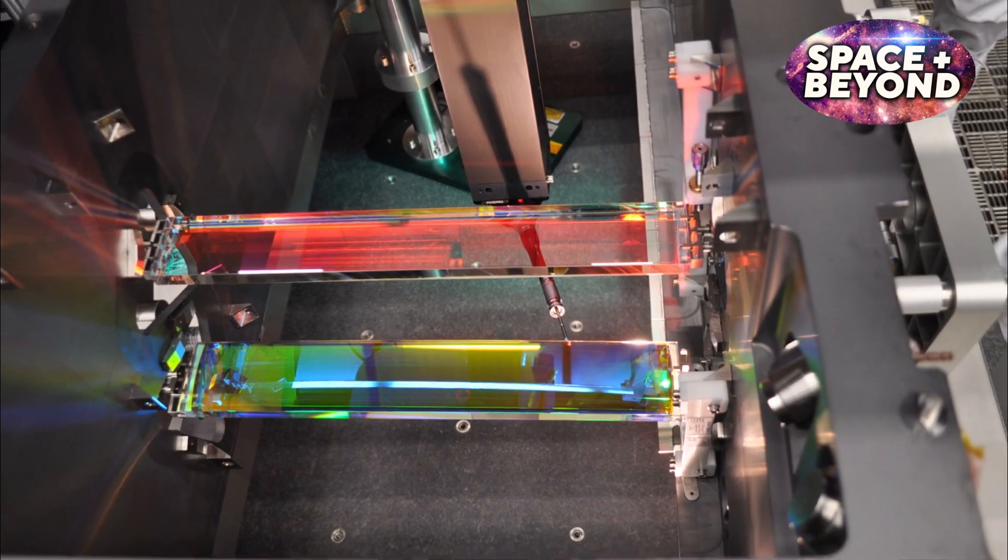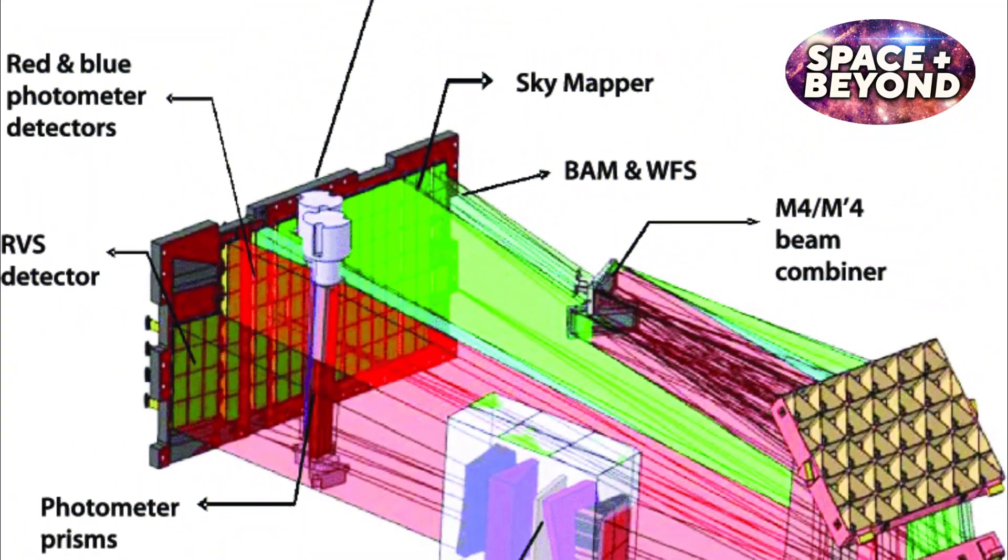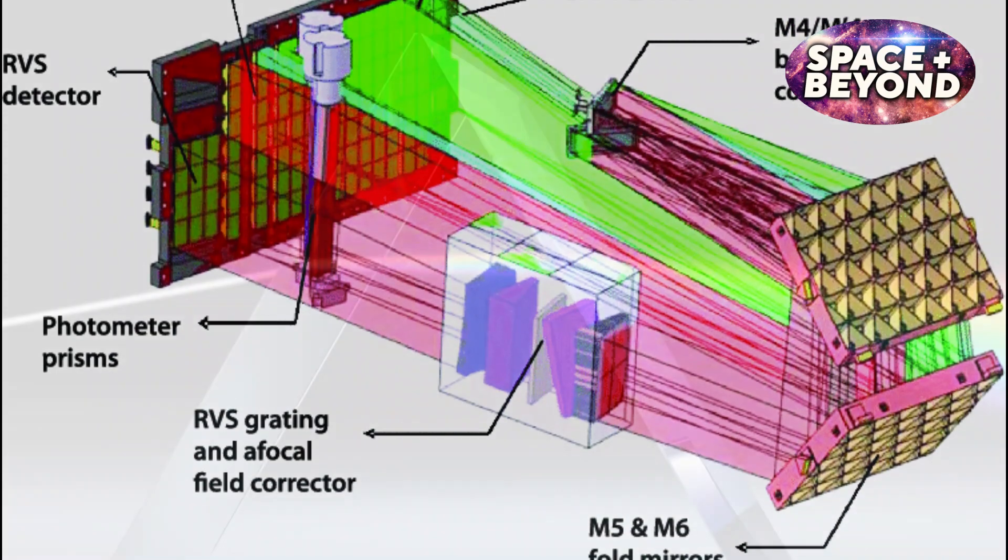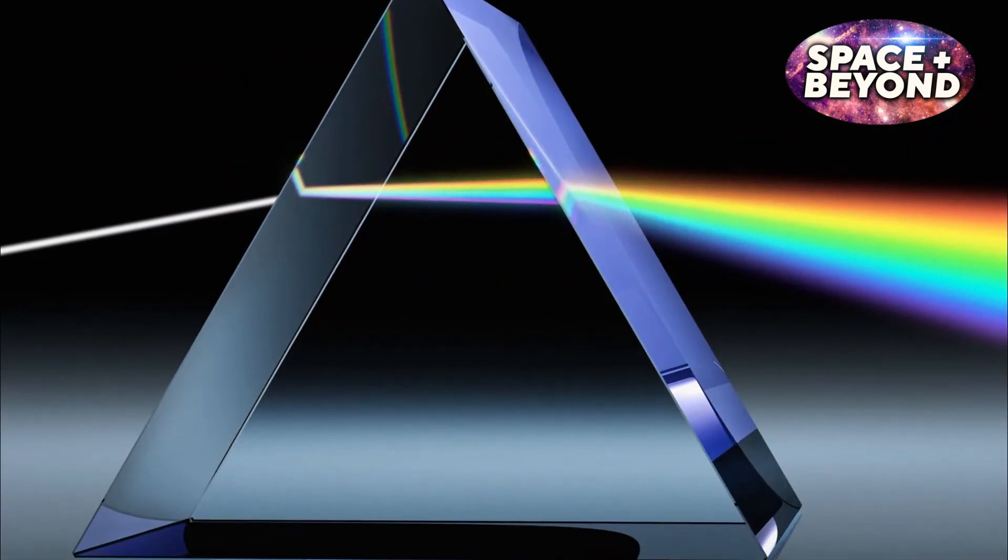and one narrow band filter centered on CA2 triplet lines, while the spectroscopic instrument is composed of two prism-like diffraction elements which split the light into its component colors.